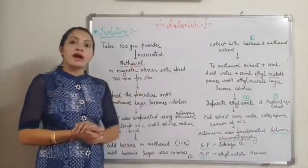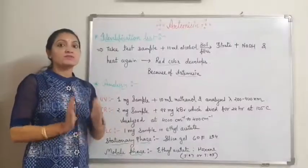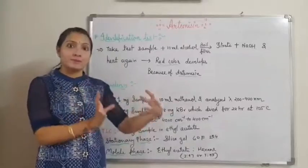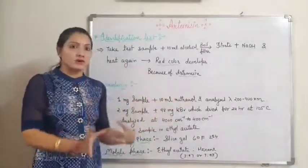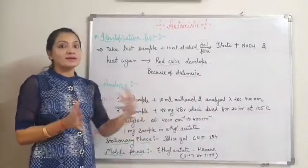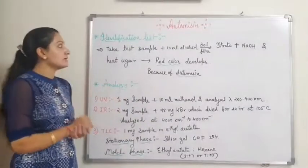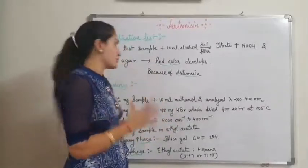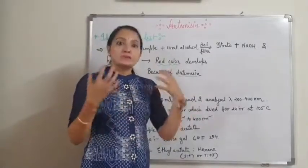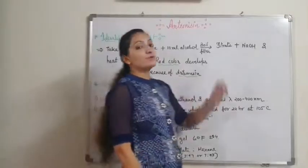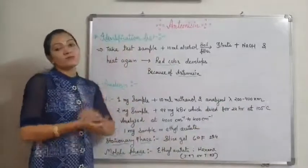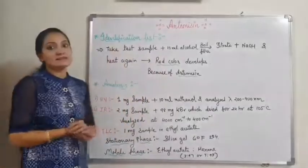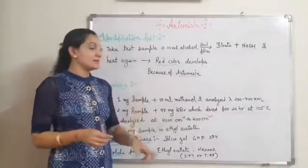This completes the isolation of Artemisinin from the drug. Moving on to identification tests for Artemisinin. The identification test is used to confirm whether the isolated compound is Artemisinin. We take the test sample, add it to 10 ml alcohol, boil it, filter it, and collect the filtrate. To the filtrate we add sodium hydroxide and heat the solution — a red color is produced, indicating the presence of Artemisinin.